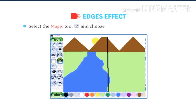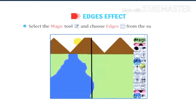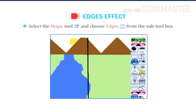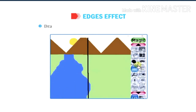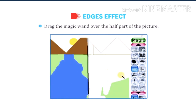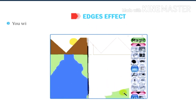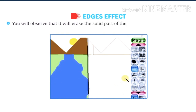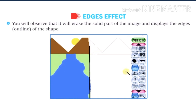Select the magic tool and choose edges from the sub-tool box. Draw the magic wand over half of the picture. You will observe that it erases the solid part of the image and displays only the edges or outline of the shape.